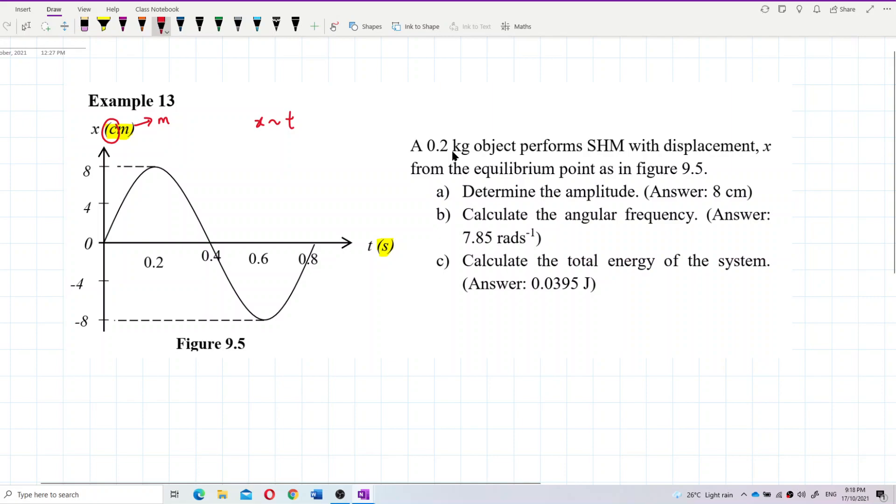Given the mass here, 0.2 kilogram. So what can we understand from this graph? This is a displacement time graph. So this is the maximum displacement here. This is the maximum displacement, which is actually the amplitude. Amplitude is 8 centimeter. And this is one wavelength. One wavelength. So we can say this is the period.